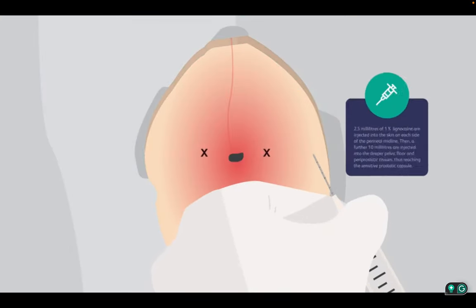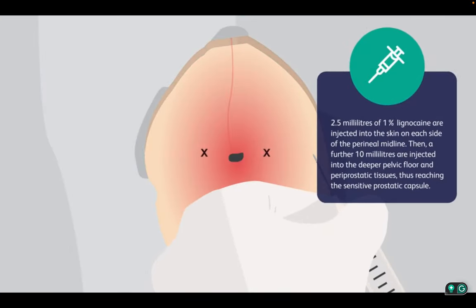Next, approximately 2.5 milliliters of 1% lignocaine are injected into the skin on each side of the perineal midline. Then, a further 10 milliliters are injected into the deeper pelvic floor and periprostatic tissues, thus reaching the sensitive prostatic capsule.